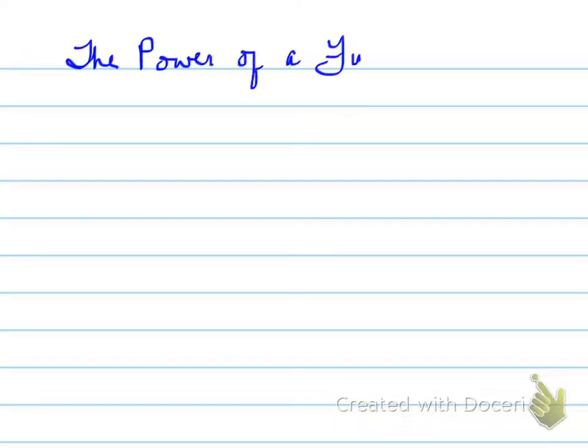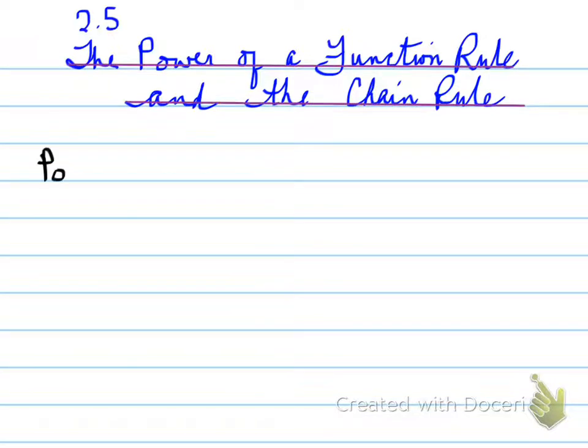Okay, 2.5, the power of a function rule and the chain rule. This is, we're looking at two parts. The first one, the power of a function rule, is just an extra rule when it deals with a base, a power that doesn't have the base of just simply x, but it has a much more complicated base.